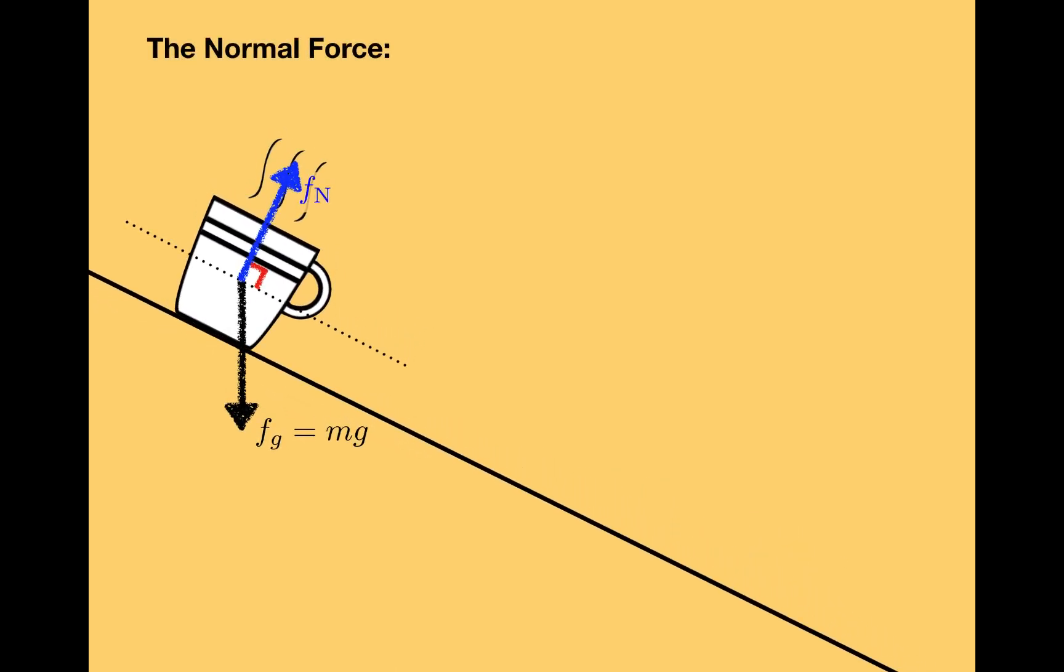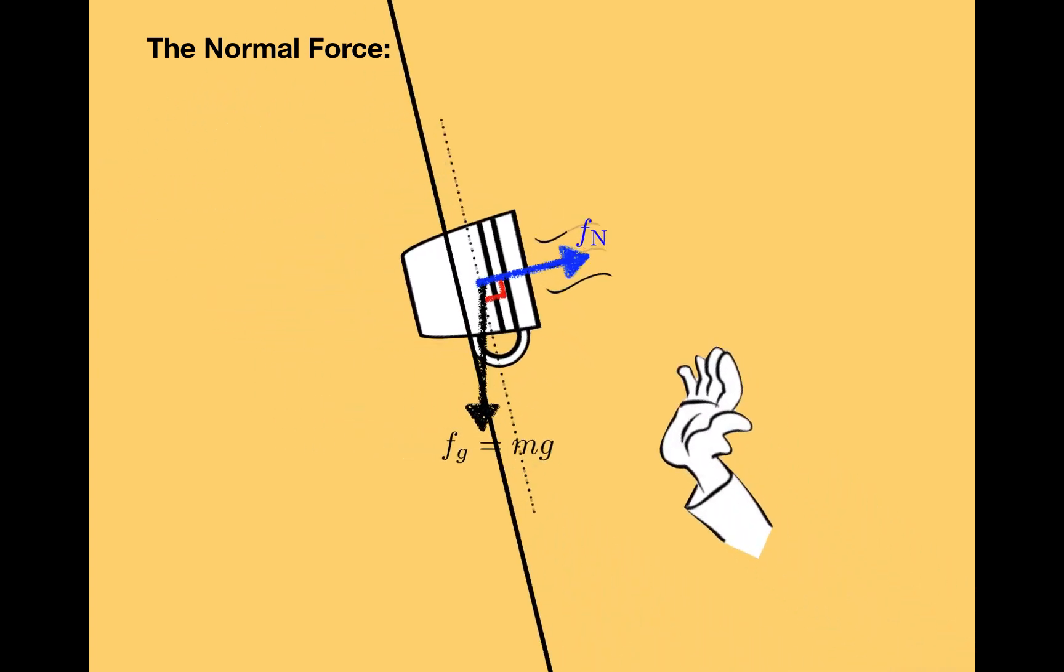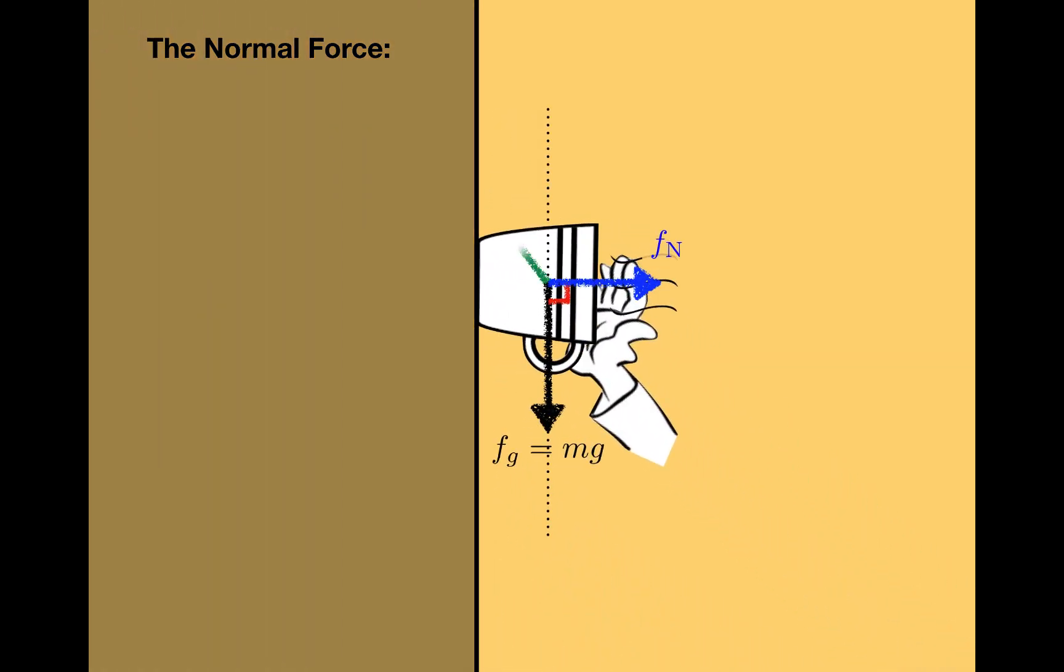If the cup is placed on an inclined plane like this, the normal force will still be perpendicular to the surface, so it will point at an angle rather than straight up. There's more to say about the inclined plane, and I'll do that in a separate video. Another possibility would be to press the cup up against a vertical wall with your hand or something. In this case, the normal force would still be perpendicular to the surface, so it would actually be horizontal.